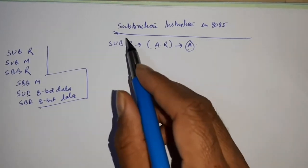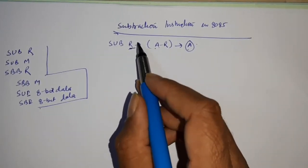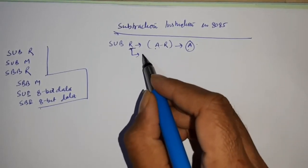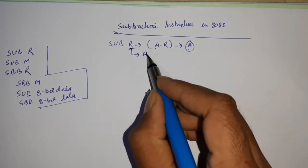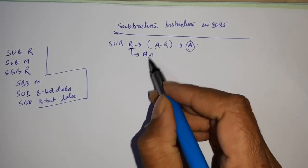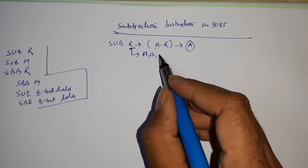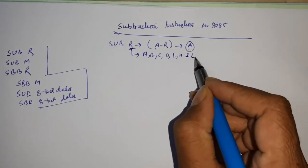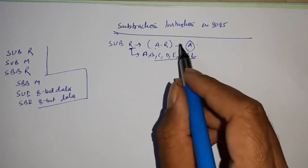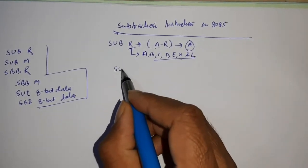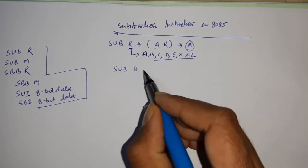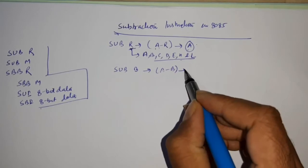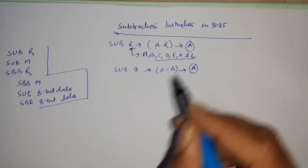In my previous video, I have already discussed what is the meaning of r here. R here means register. In the 8085 microprocessor there are seven registers that are mainly used in any operation: A, B, C, D, E, H, and L. Suppose I am writing SUB B — the meaning of this will be A minus B and the output will be stored in the accumulator.